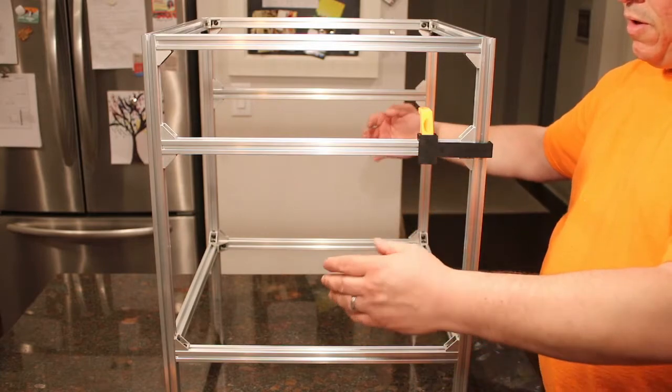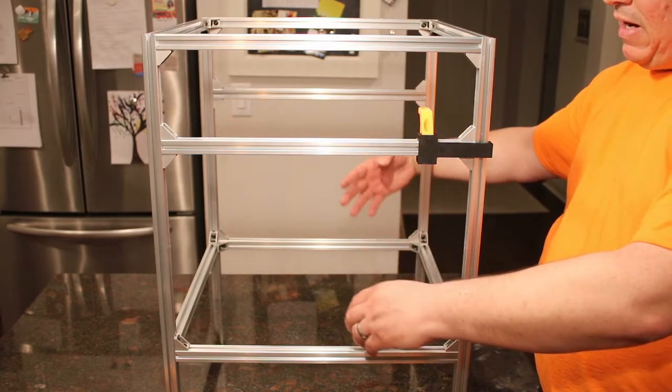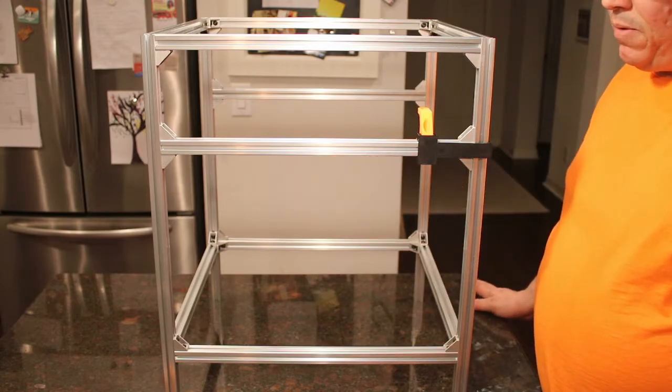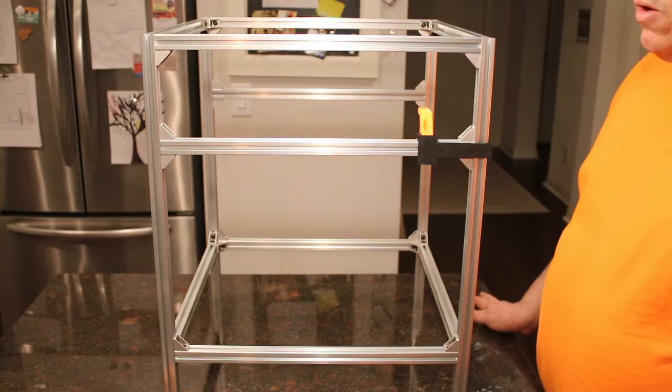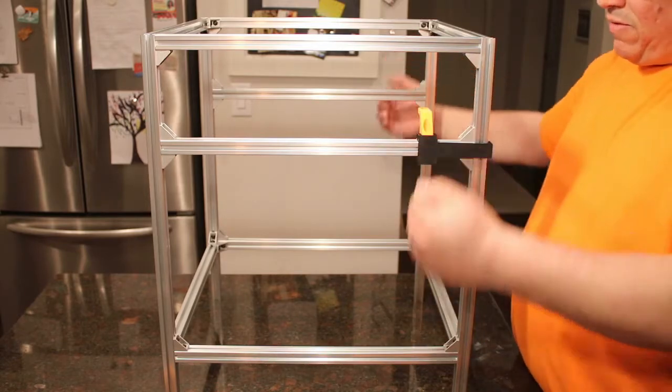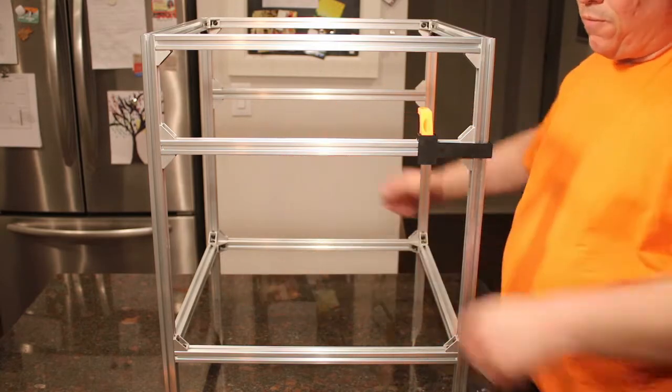Then we're going to install the Z-carriage and then put the rods through and install the other upper and lower Z-rod mounts. And they're going to be located by the spacing of the carriage and the location where the rods need to be. So as long as we've got this set up perfectly, everything's going to stack forward from there.